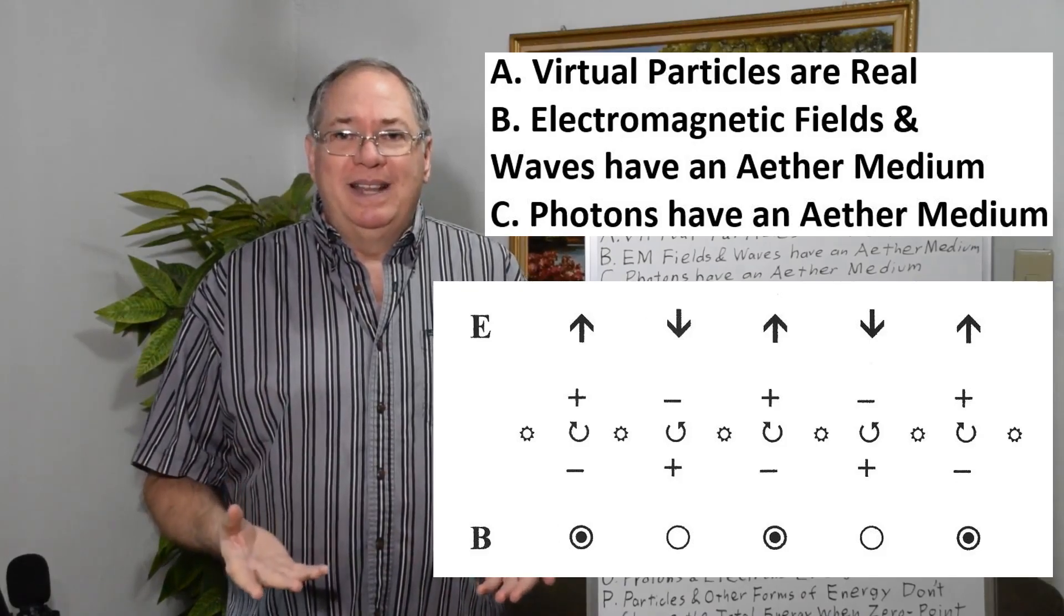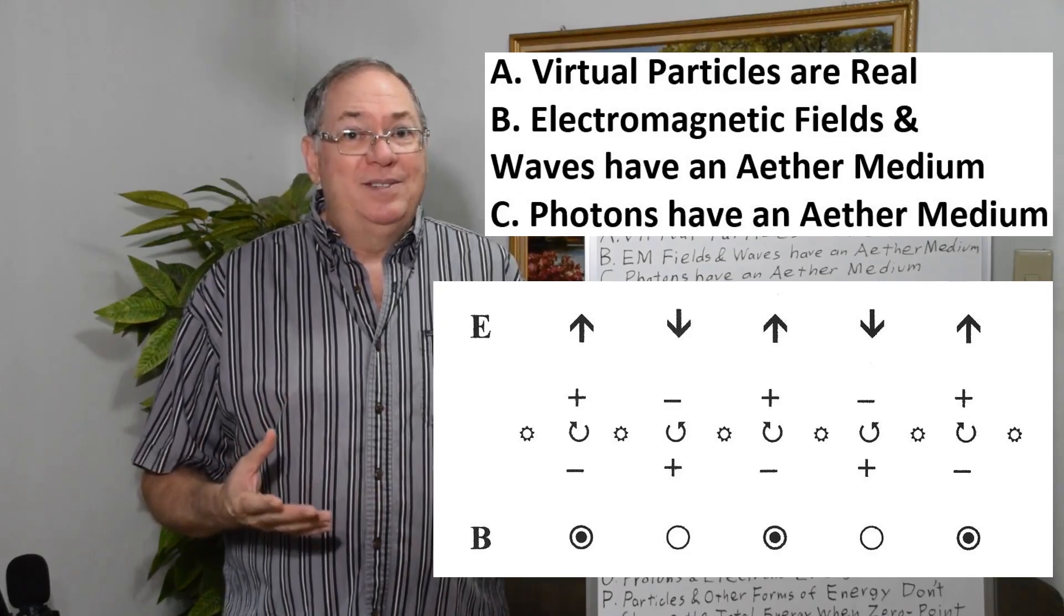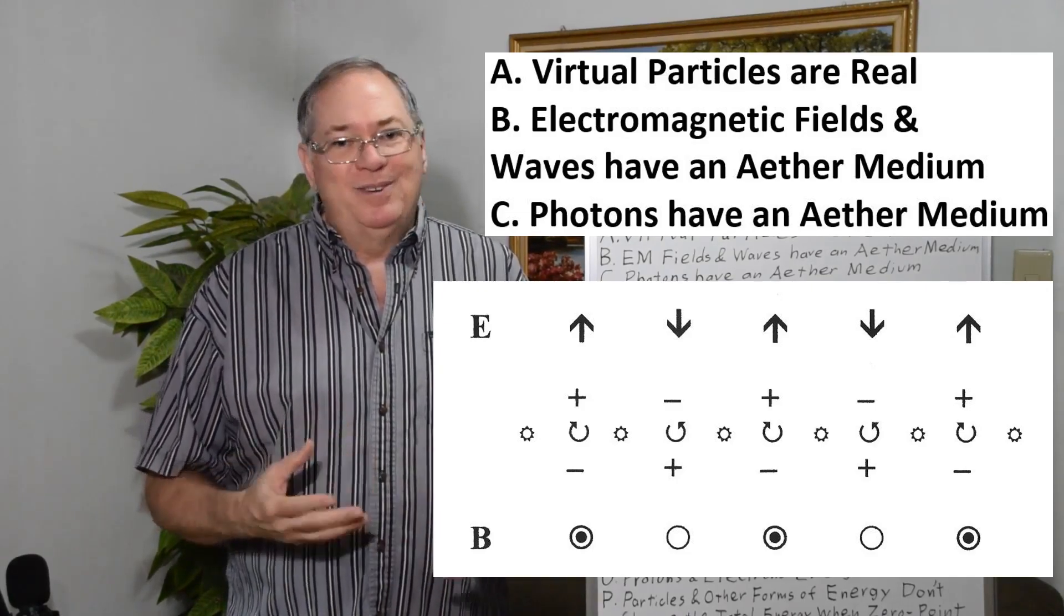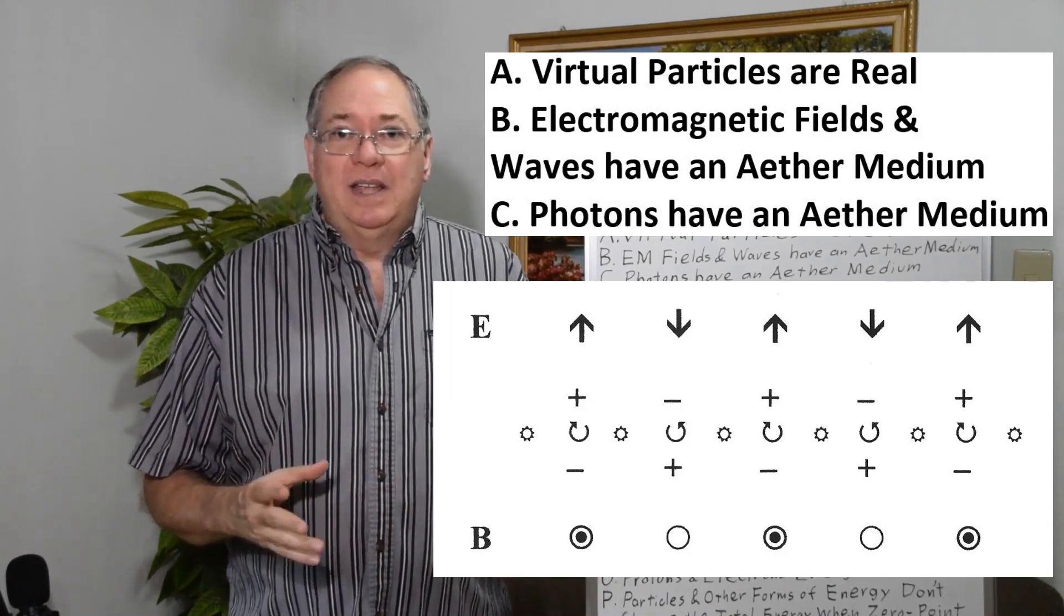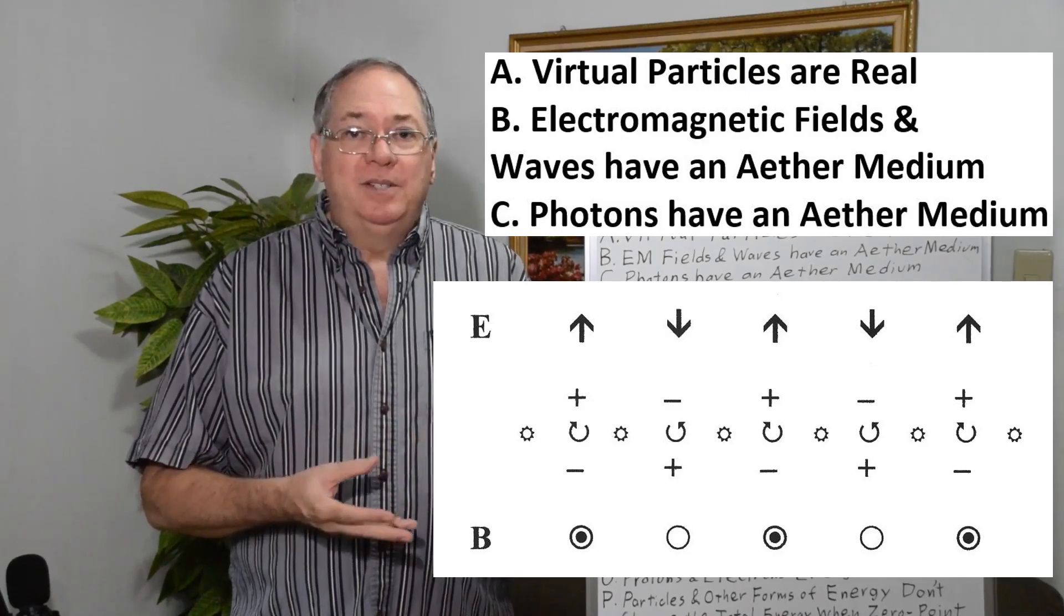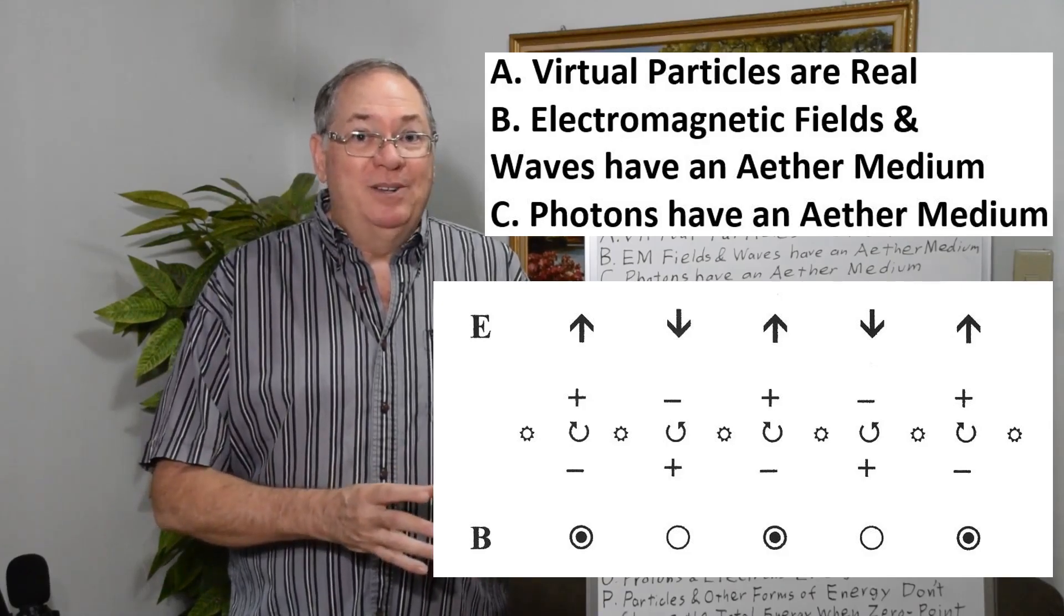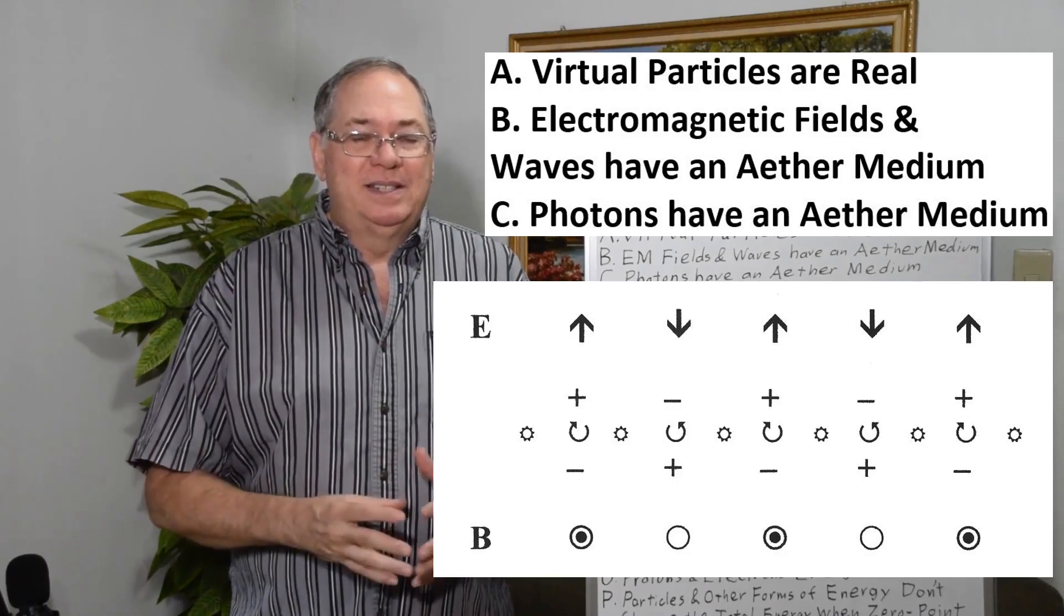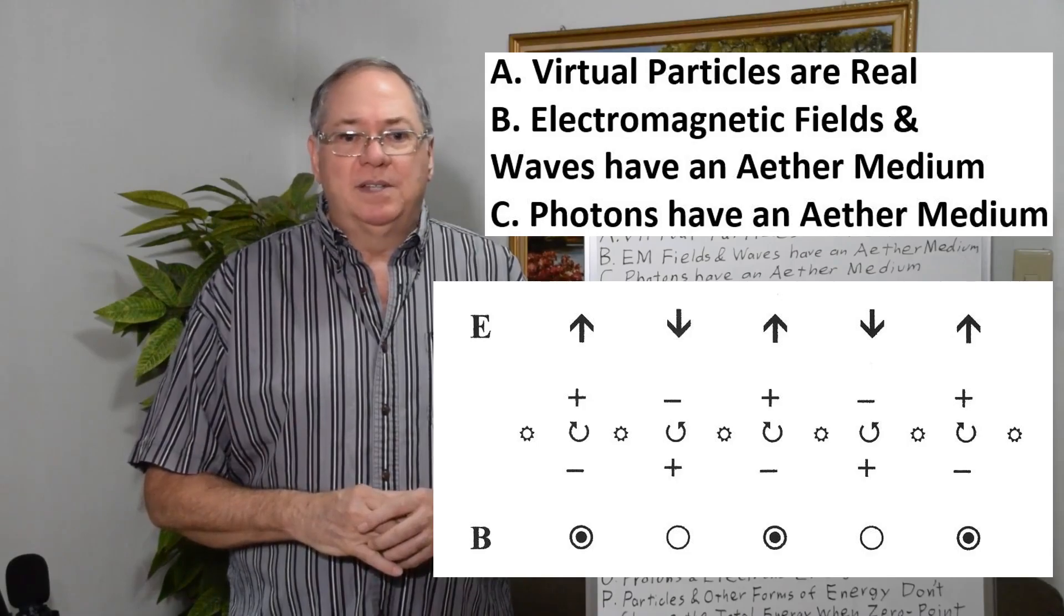The same thing is true with photons. If you have electromagnetic fields and waves as having an ether medium, then photons do too, because that's what they are. Although photons have the additional property of a rotating electromagnetic field that appears to have a dipole in the middle. And so that dipole in the middle needs to be a real thing for it to be real physics. And that goes back to the de Broglie model of the photon that I've discussed before.